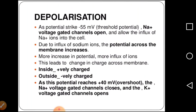At the polarization state, the voltage was minus 70 millivolts. As more positive ions move inside, this voltage increases to minus 55 millivolts. At this stage, sodium voltage-gated channels open and allow the influx of sodium ions, causing the potential across the membrane to increase further. More increase in potential causes more influx of ions — it is basically a vicious cycle. This voltage keeps increasing from minus 55 millivolts until it reaches plus 40 millivolts, which is called the overshoot.